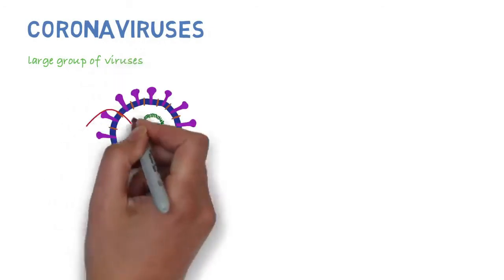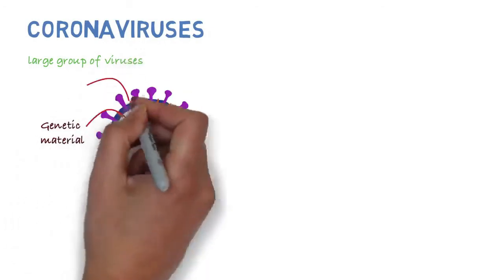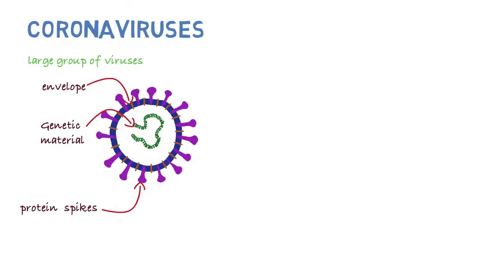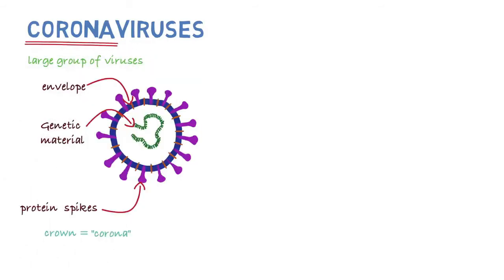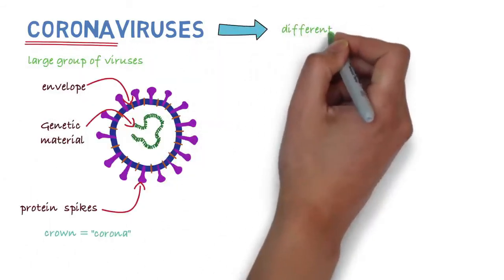Coronaviruses are a large group of viruses. They consist of a core of genetic material surrounded by an envelope with protein spikes. This gives it the appearance of a crown. Crown in Latin is called corona, and that's how these viruses get their name.